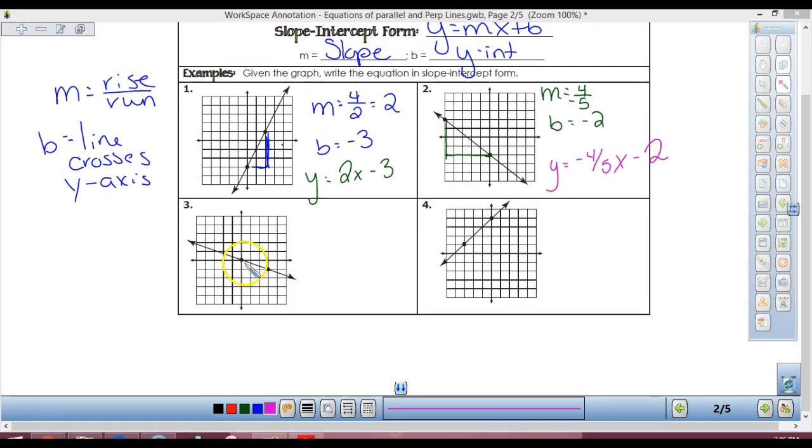Okay, so here, m equals what's my rise? One. What's my run? Three. I'll go down now, negative one-third.